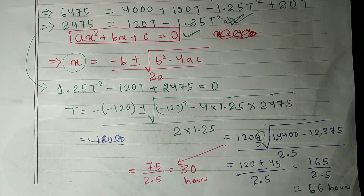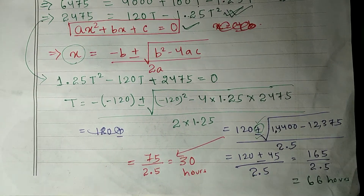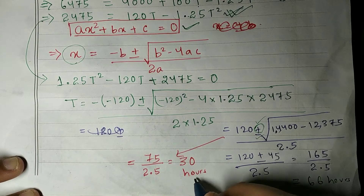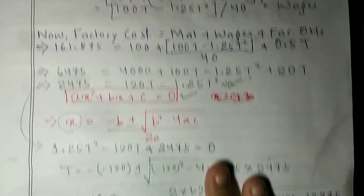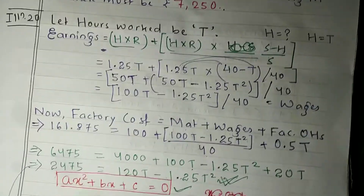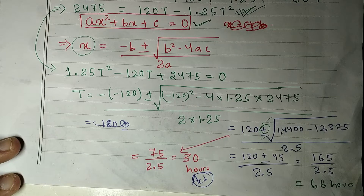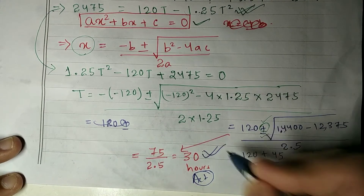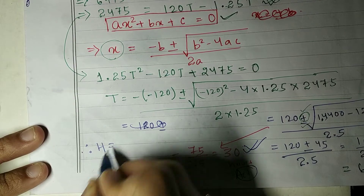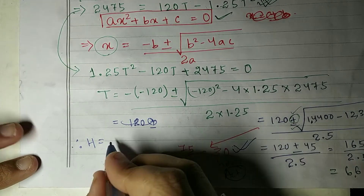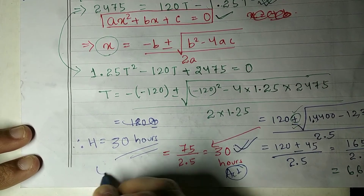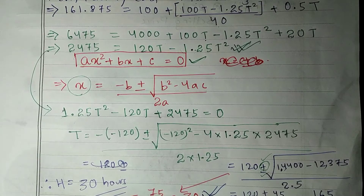We need to decide which value to use. Since we are on the Rowan Plan and bonus is being paid, actual time must be less than standard time (40 hours). Between 66 and 30, only 30 is less than 40. So actual hours worked H = 30 hours. Illustration 20 is complete.